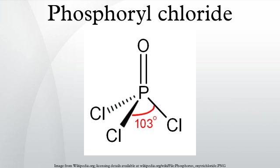Reduction of tricalcium phosphate with carbon in the presence of chlorine gas: Ca3(PO4)2 + 6C + 6Cl2 → 3CaCl2 + 6CO + 2POCl3.